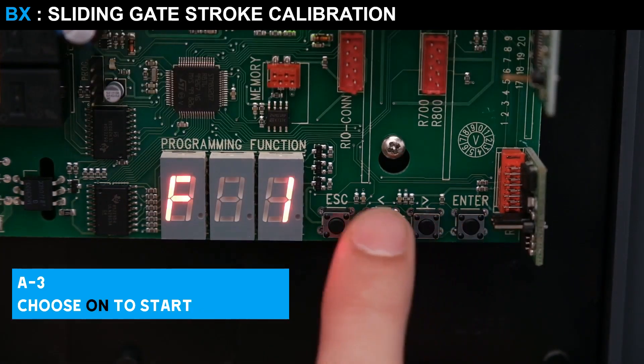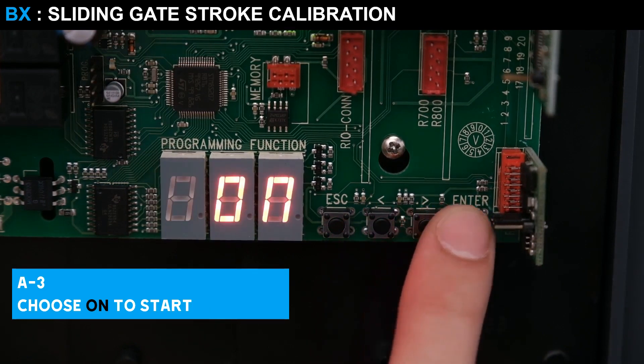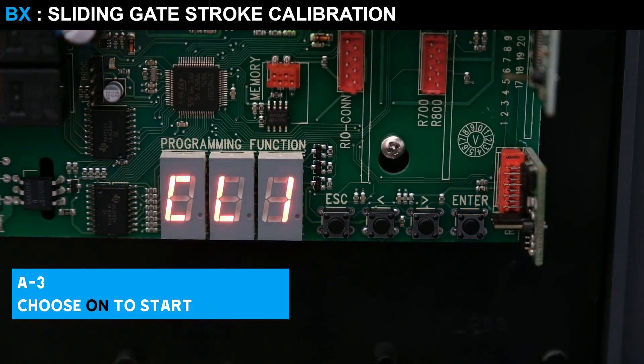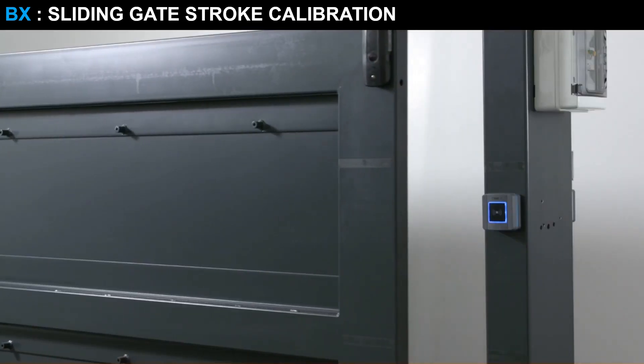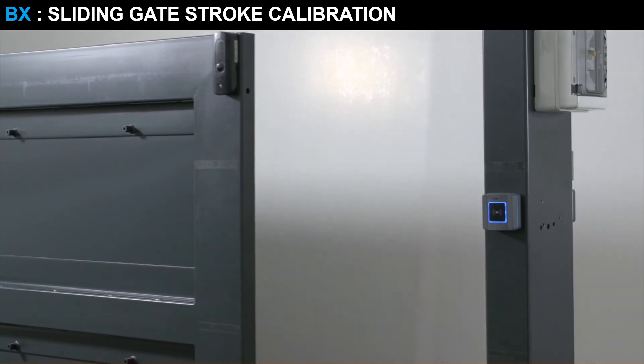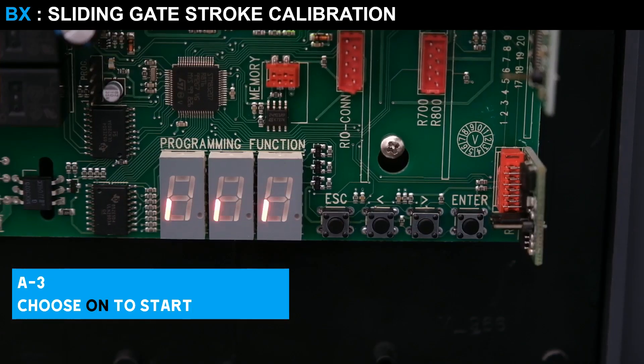We can therefore calibrate the automation through function A3. Press Enter to select the on value, and then confirm. At this point the calibration procedure will start. The automation will perform a total closing and opening. Once the operation is completed, the automatic gate will be correctly calibrated.